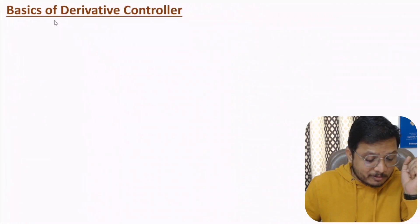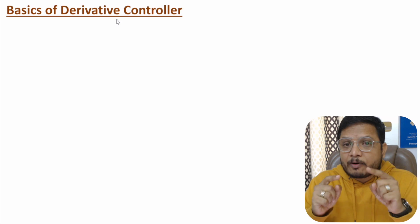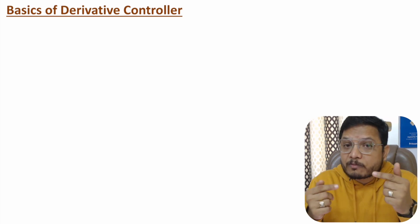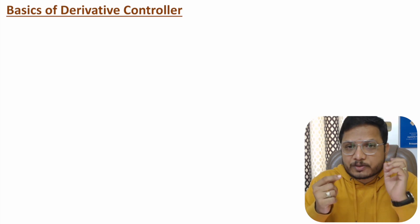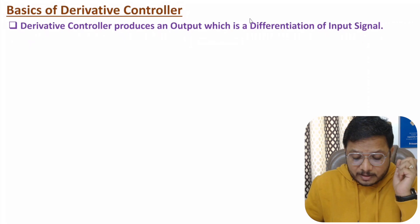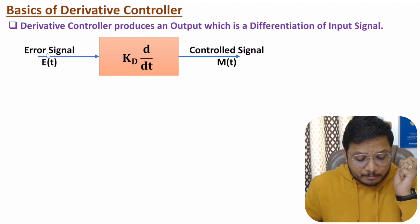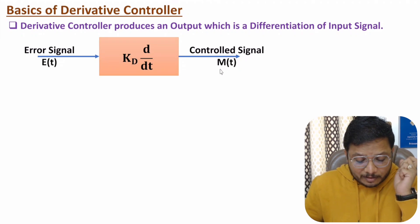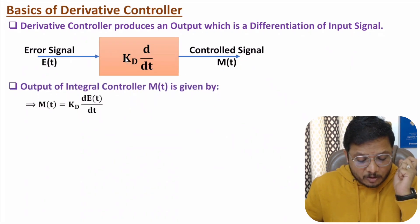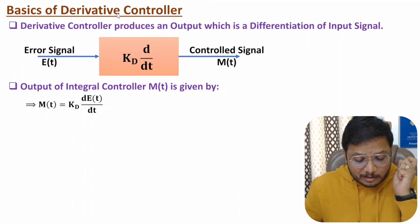Let us start with the first agenda: basics of derivative controller. The derivative controller performs a differentiation operation, so the output of the derivative controller will be the differentiation of the input signal. If the input signal is the error signal e(t) and the output is the controlled signal m(t), then m(t) = Kd × d(e(t))/dt.